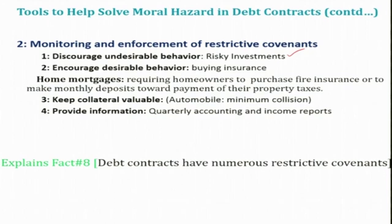Other covenants restrict the borrowing firm from engaging in certain risky business activities such as purchasing other businesses. The second type of covenant is to encourage desirable behavior — for example, it can encourage a borrower to engage in desirable activities that make it more likely the loan will be paid off, such as by buying insurance.